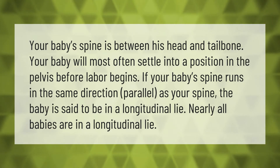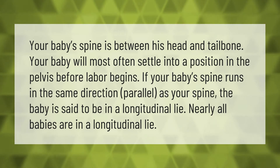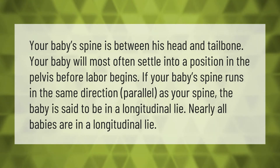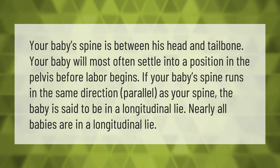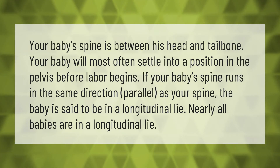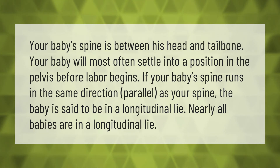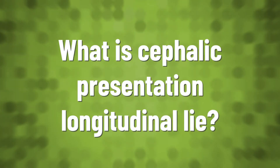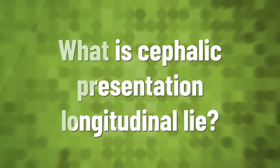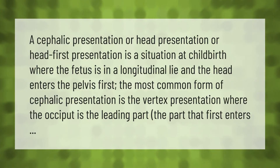Your baby's spine is between his head and tailbone. Your baby will most often settle into a position in the pelvis before labor begins. If your baby's spine runs in the same direction — parallel — as your spine, the baby is said to be in a longitudinal lie. Nearly all babies are in a longitudinal lie.